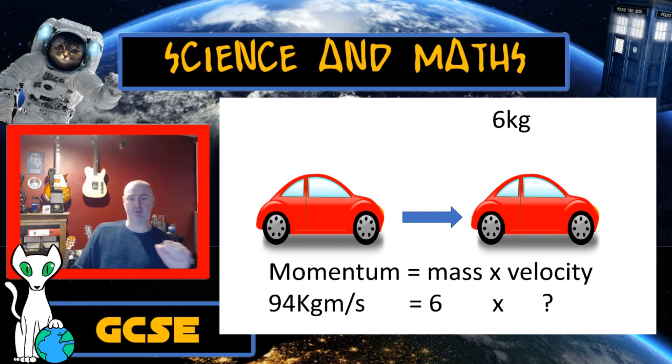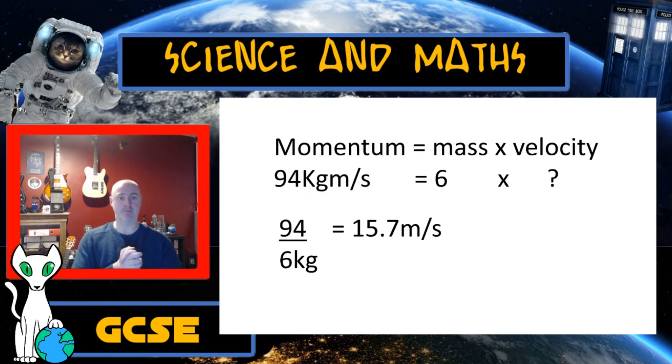So I should be able to rearrange that equation. I'm going to take the 6 from the right hand side of the equal sign, put it over to the left hand side and it will become a divide because it's a times on the right. Now that gives me this: 94 divided by 6 gives me 15.7 meters per second. If you actually calculate that into your calculator, I think it turns out something like 15.667 or something like that.